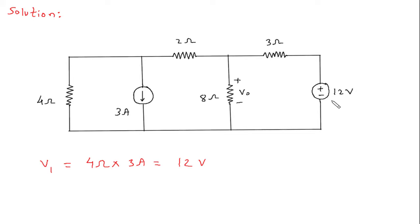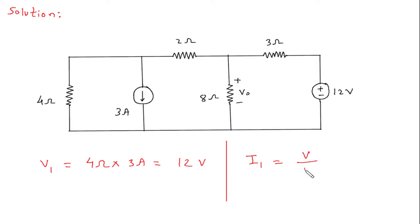And we have to convert this voltage source into its equivalent current source. Let's say this is current I1, so I1 is equal to V by R. V is 12, R is 3, so this will be 4 ampere.